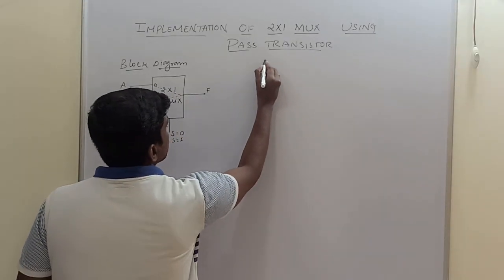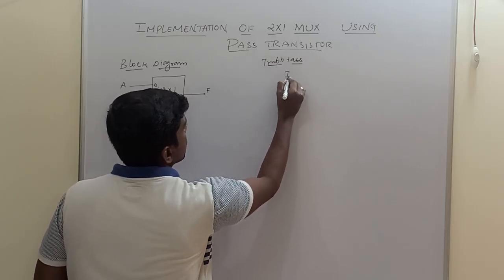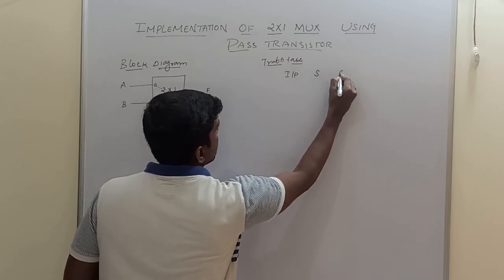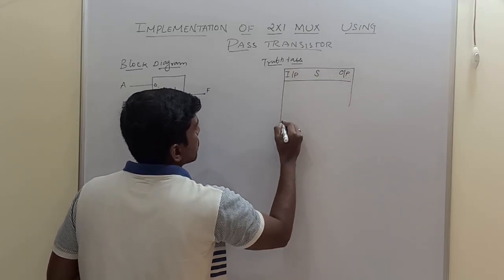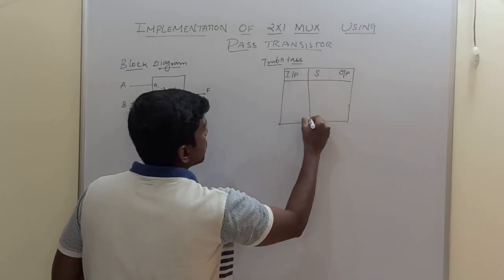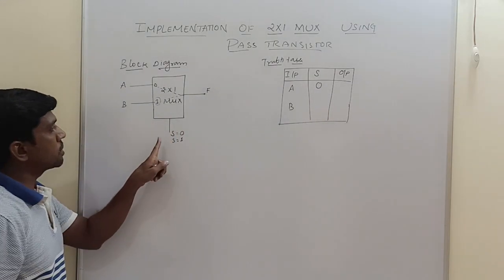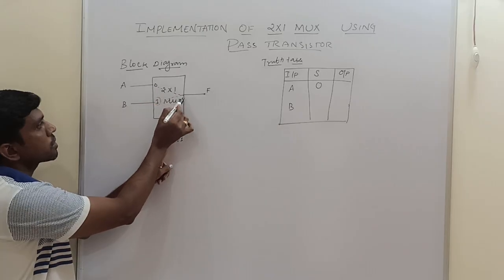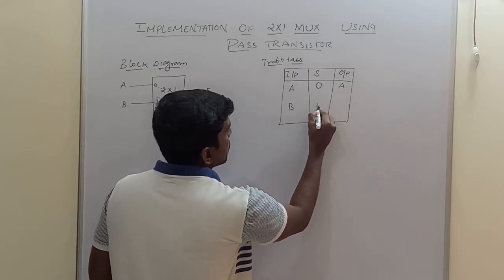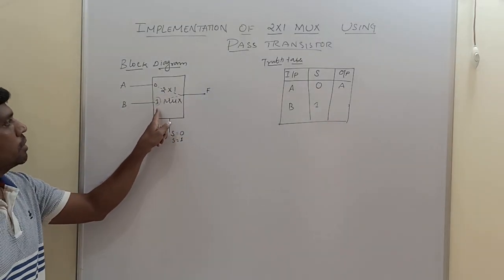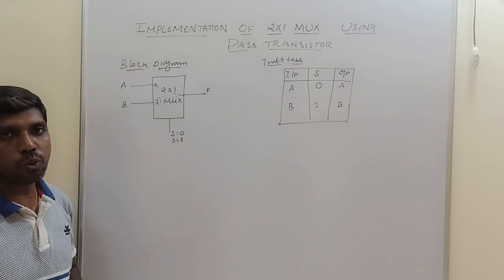Now I will write the truth table. Input, selection line, then output. So this is a 2x1 MUX. We have two inputs A and B. When the selection line equals 0, the 0th terminal input is connected to the output F, so the output is A. When S equals 1, the first terminal input is connected to the output F. The output is B. So this is the truth table for 2x1 MUX.